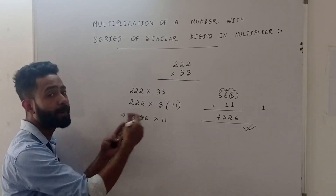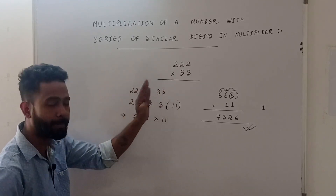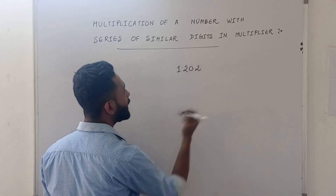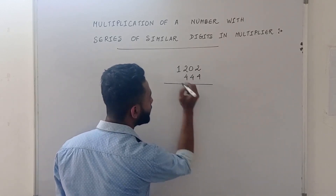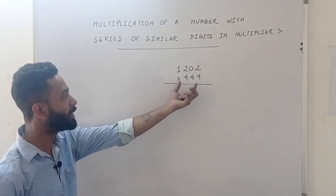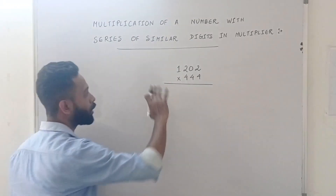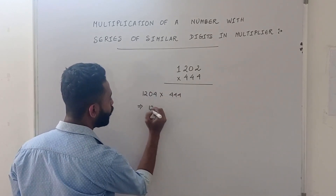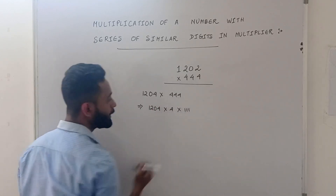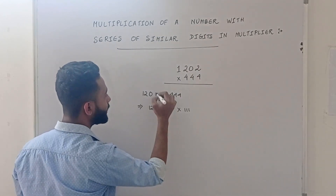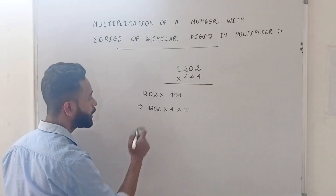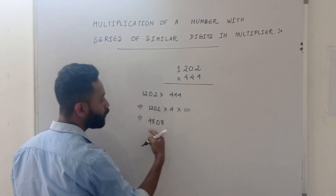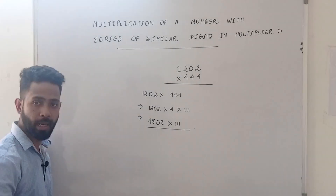Now it is a whole number that we plan — similar. So can we apply the same trick to any answer? Let's check it out. Suppose the number is 1202 multiplied by 444. We are going to use the same trick: take 4 as common. So 1202 multiplied by 4, multiplied by 111. That gives us 4808 multiplied by 111.